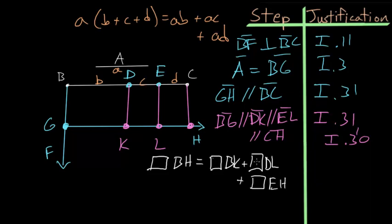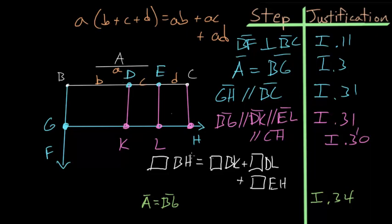We need one more piece of information to finish the proof. We already know that line A equals BG. Since all of these are parallelograms, Book I Proposition 34 tells us that opposite sides are equal. So in parallelogram BK, BG and DK are opposite, meaning DK equals BG equals A. By the same argument applied to the other parallelograms, A also equals EL and CH.